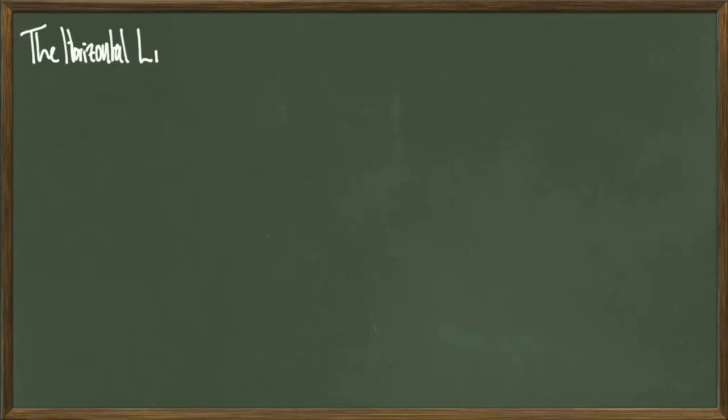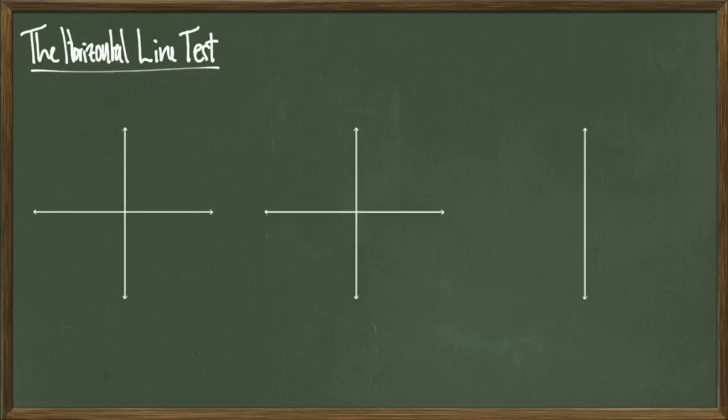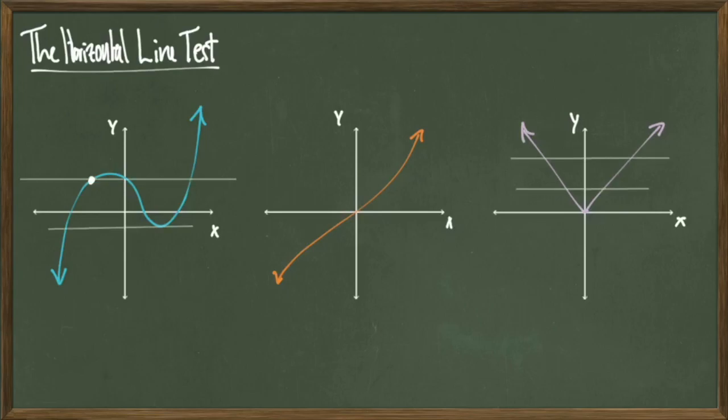I said before that a function cannot have an inverse if it is not 1 to 1. There's actually a test to see if functions are 1 to 1 by looking at the graphs. It's called the horizontal line test. Basically, any horizontal line that crosses your graph more than once tells you that the function you're looking at is not 1 to 1. By drawing horizontal lines on my left and right graphs, I see that I am crossing my graph multiple times with the same horizontal line. So my left and right graphs are not 1 to 1.